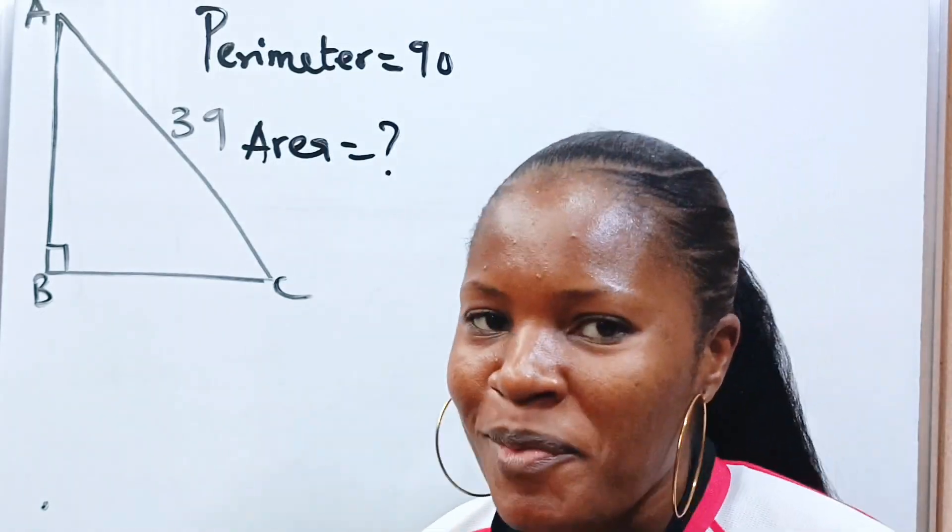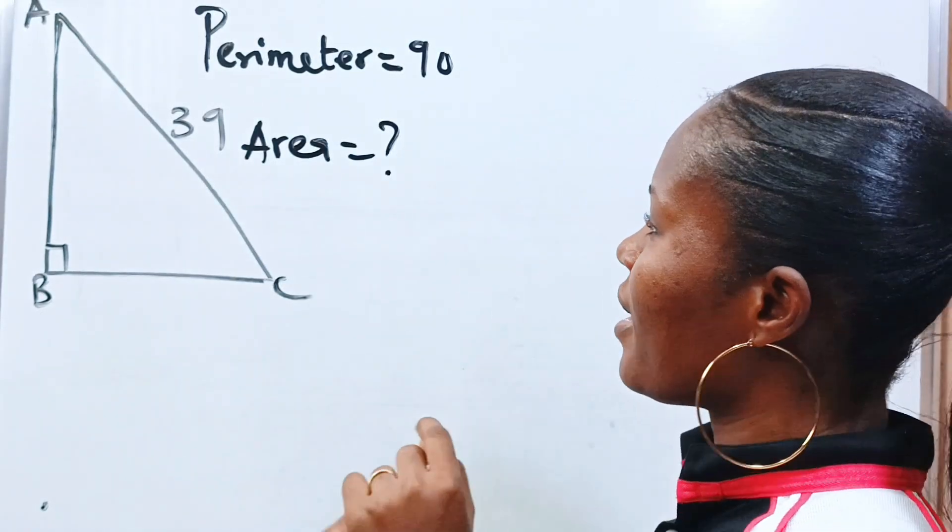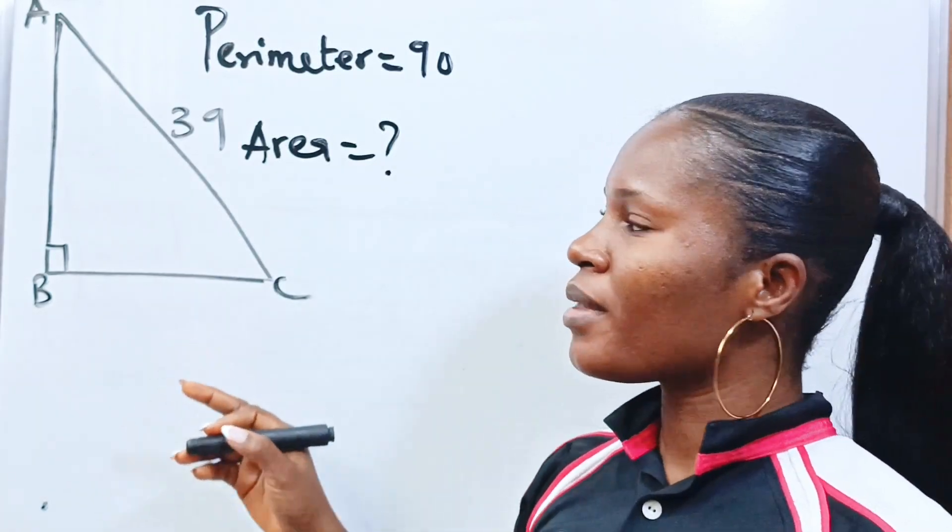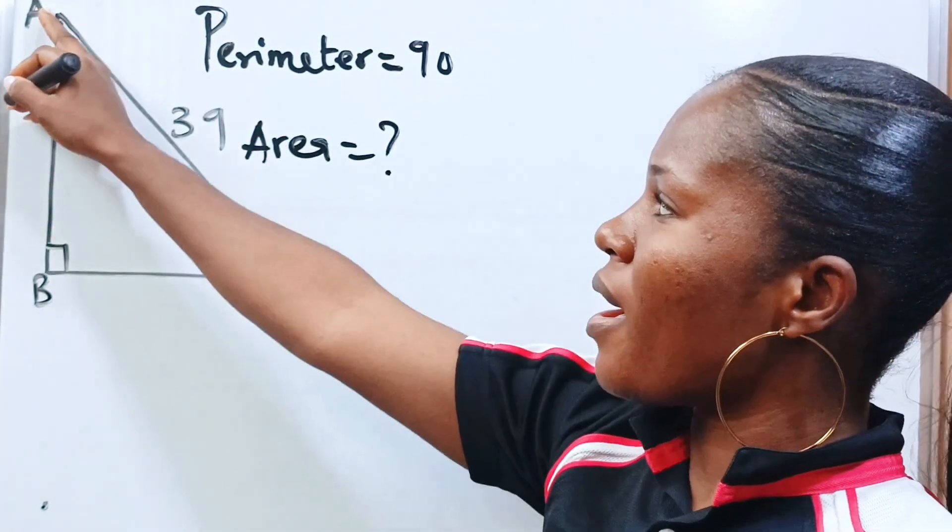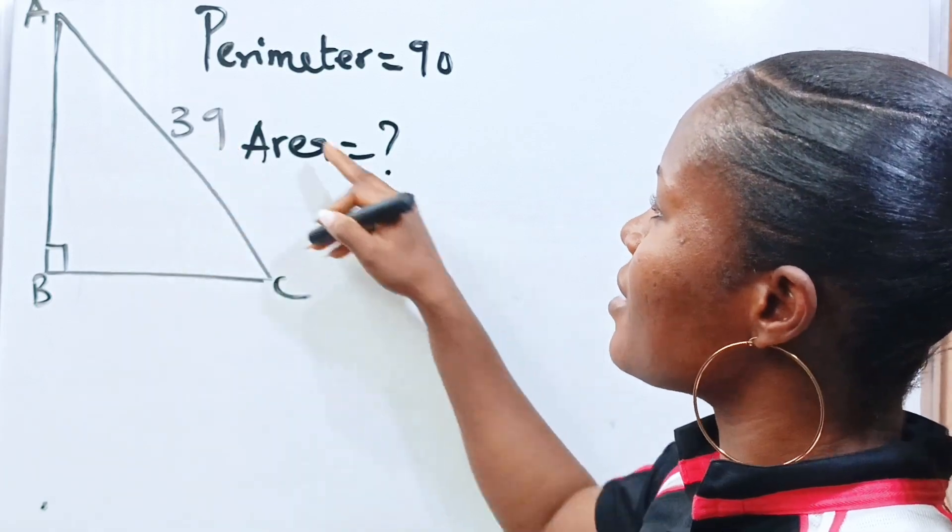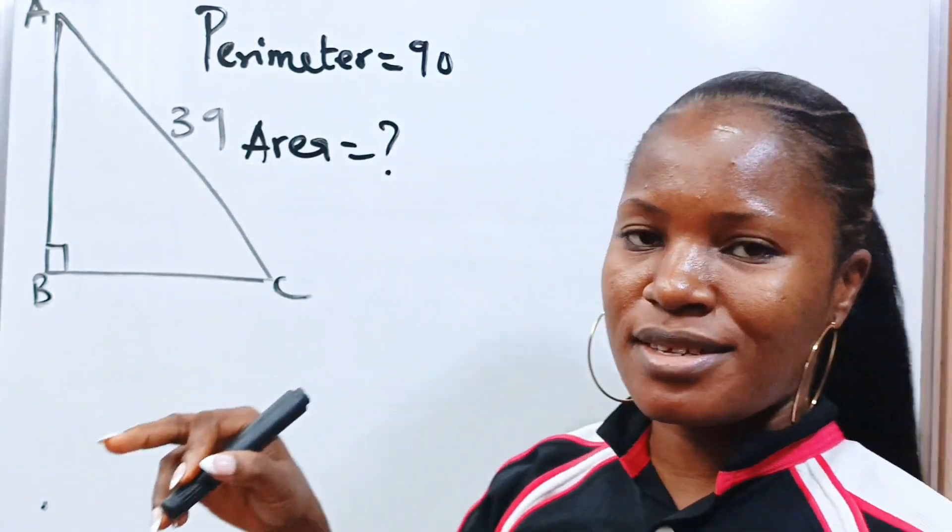Hello wonderful people! Let us find the area of this right angle triangle if the hypotenuse is 39 units and the perimeter is 90.